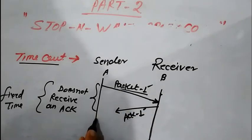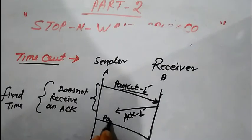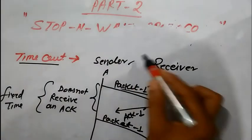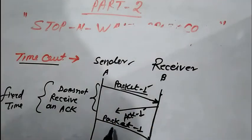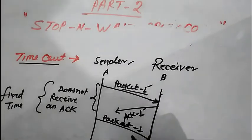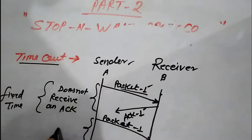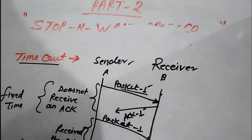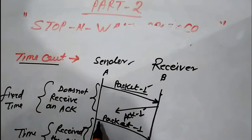So again the sender retransmits packet 1 to the receiver. The receiver sends an acknowledgement for that particular packet. This time the sender receives the acknowledgement within the fixed time duration, and understands that the delivery of the packet is complete.